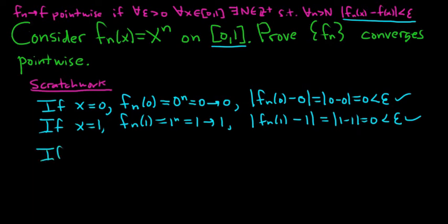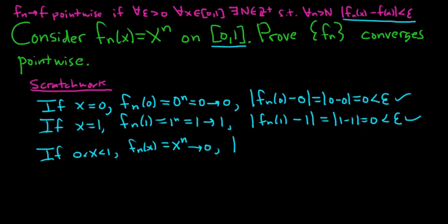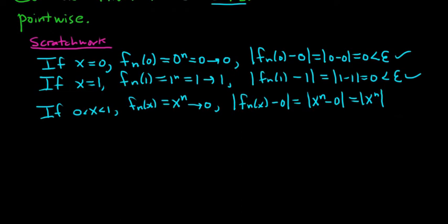The more challenging case is when x is strictly between 0 and 1. In that case, f sub n of x is simply x to the n. Whenever you have a number strictly between 0 and 1 raised to a power, that number gets smaller and smaller as the power grows, eventually approaching 0. So as n approaches infinity this approaches 0, meaning our limit is 0. In the proof, we'll look at |f sub n(x) − 0| = |x^n| = x^n, and we need to show this is less than epsilon.